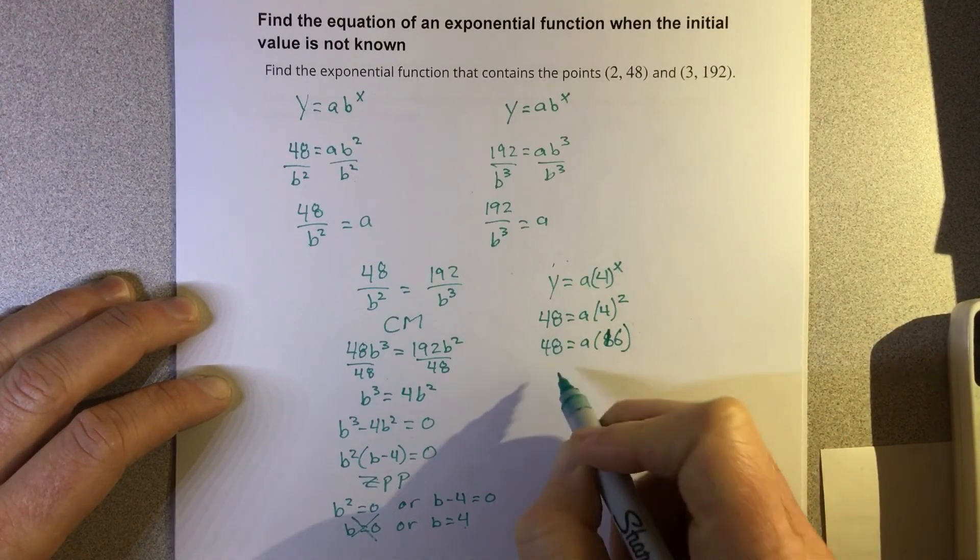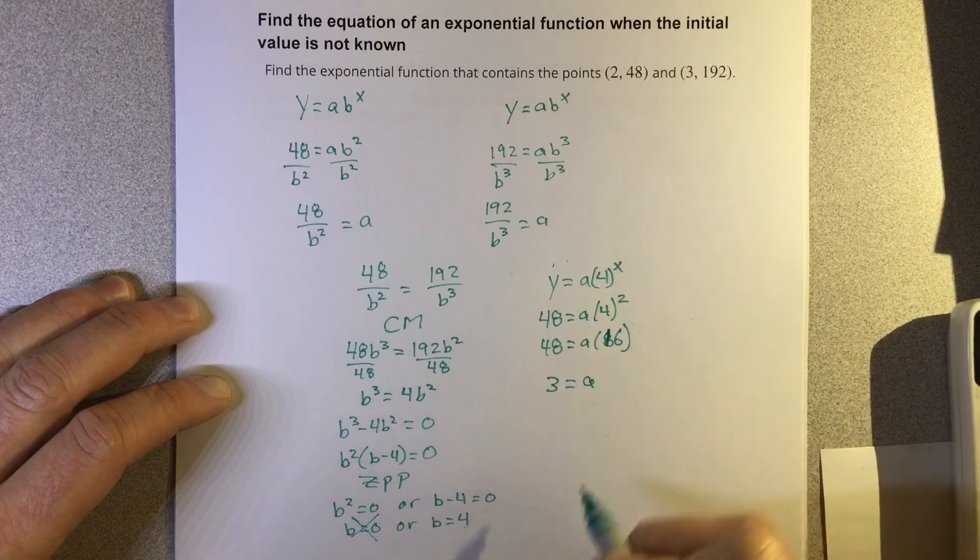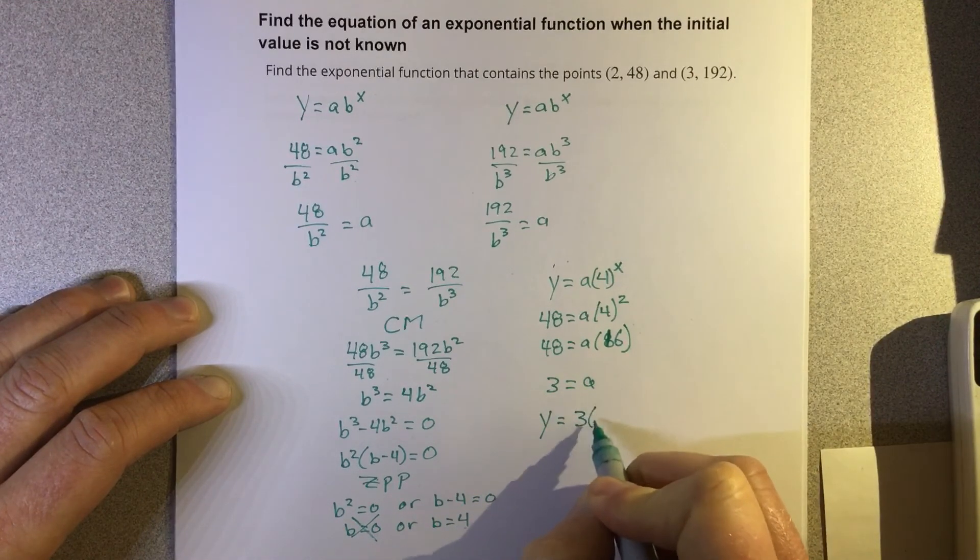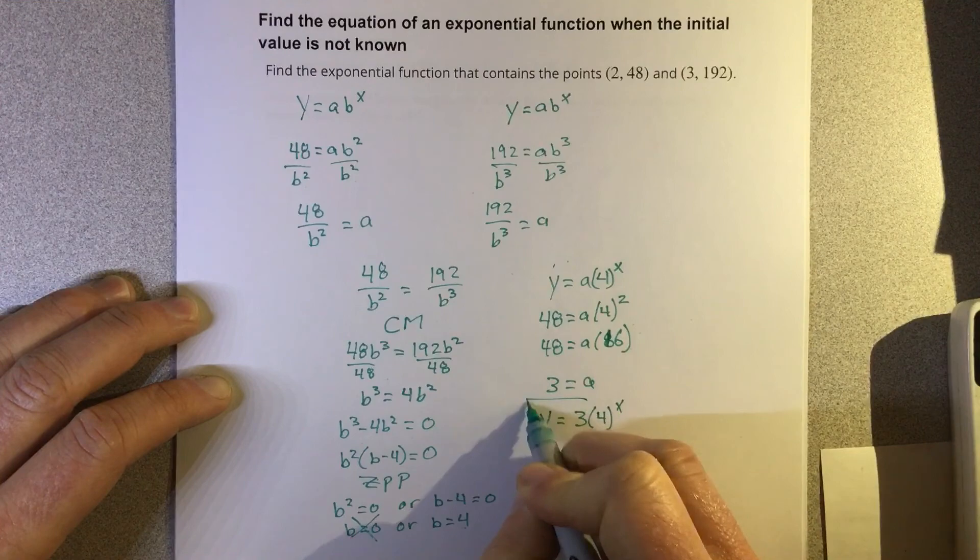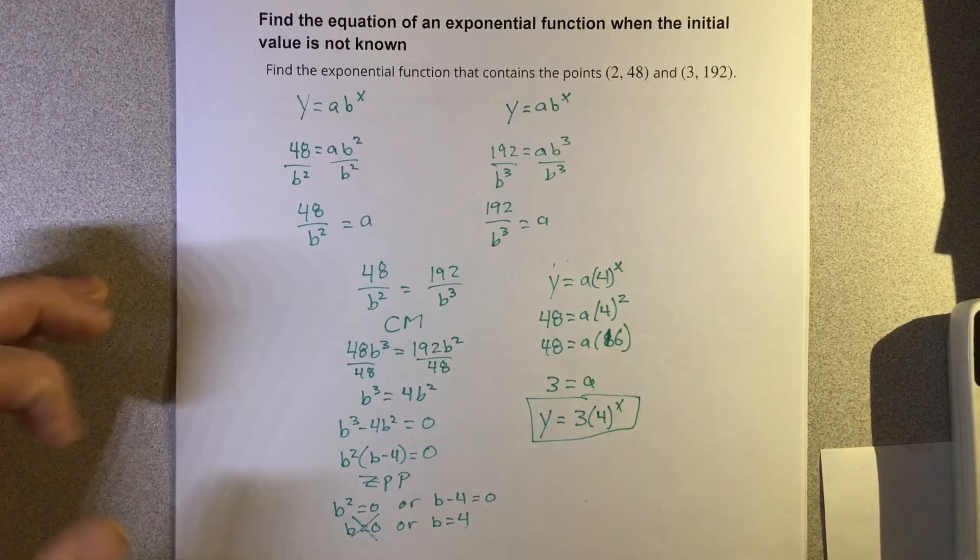Divide by 16 on each side. I get 3 equals a. So that's y equals 3 times 4 to the x. That's the exponential equation.